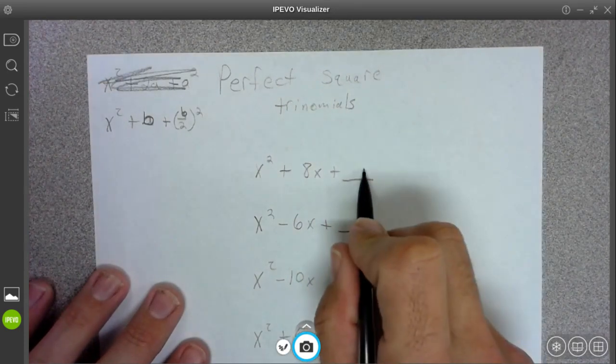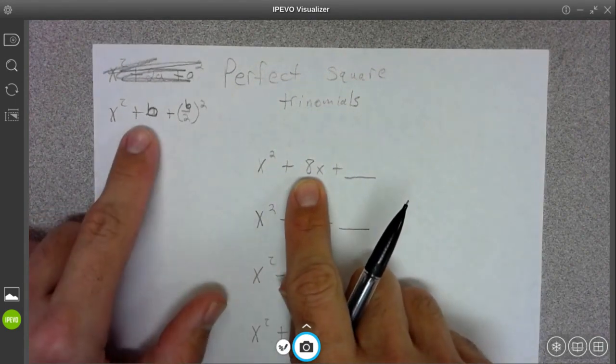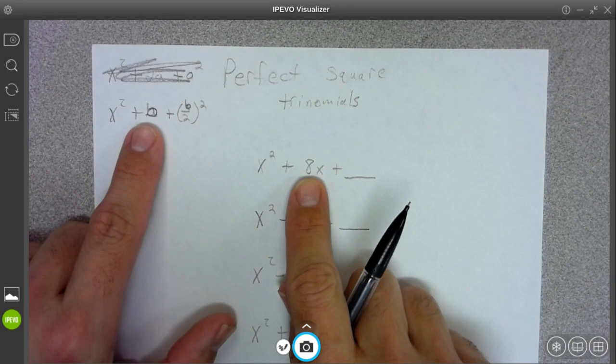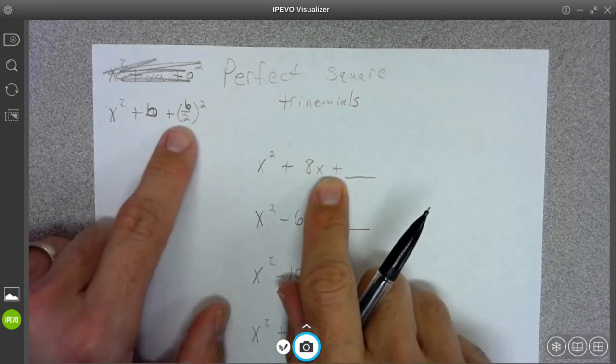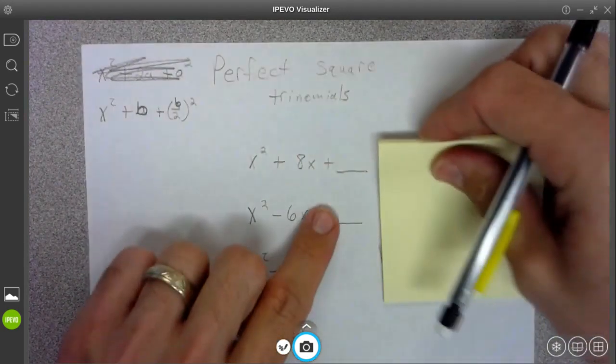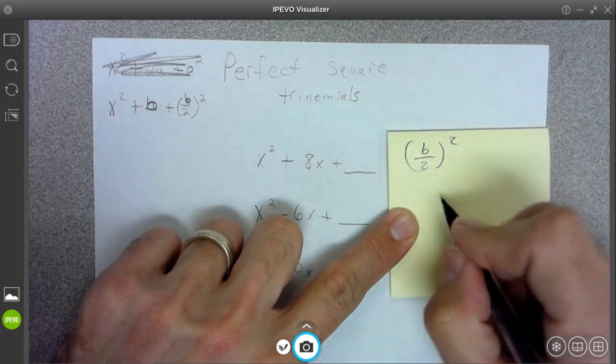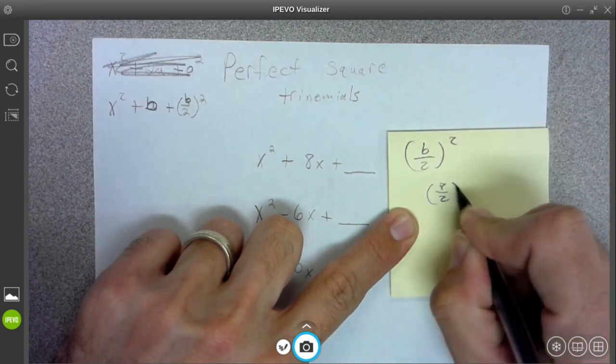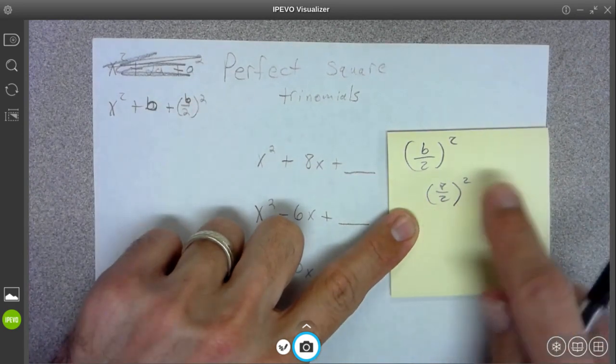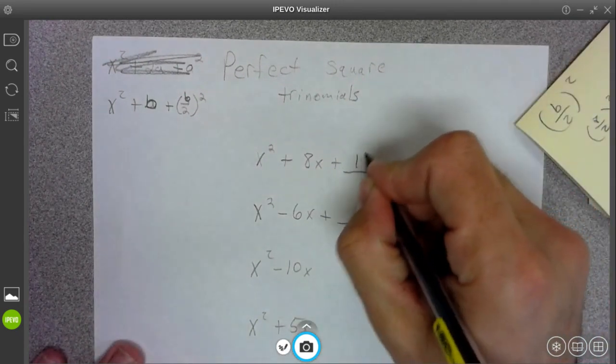So we're going to add some number here so that something fancy happens. The 8 is like our b. Now what I'm going to do is add this b over 2 squared. So if 8 is my b, then this is going to be like 8 over 2 squared. So it's half of 8 and then squared. Half of 8 is 4, 4 to the second power is 16.